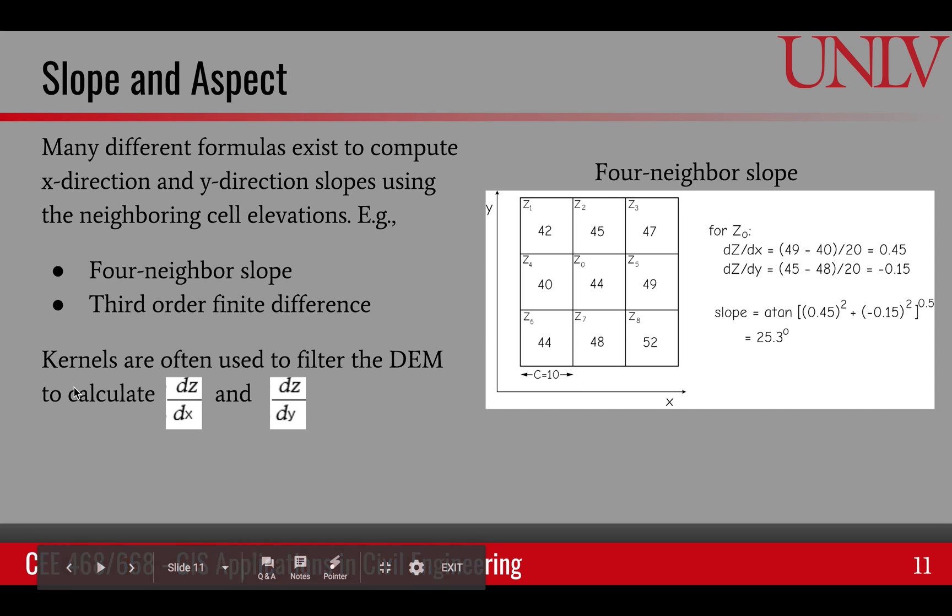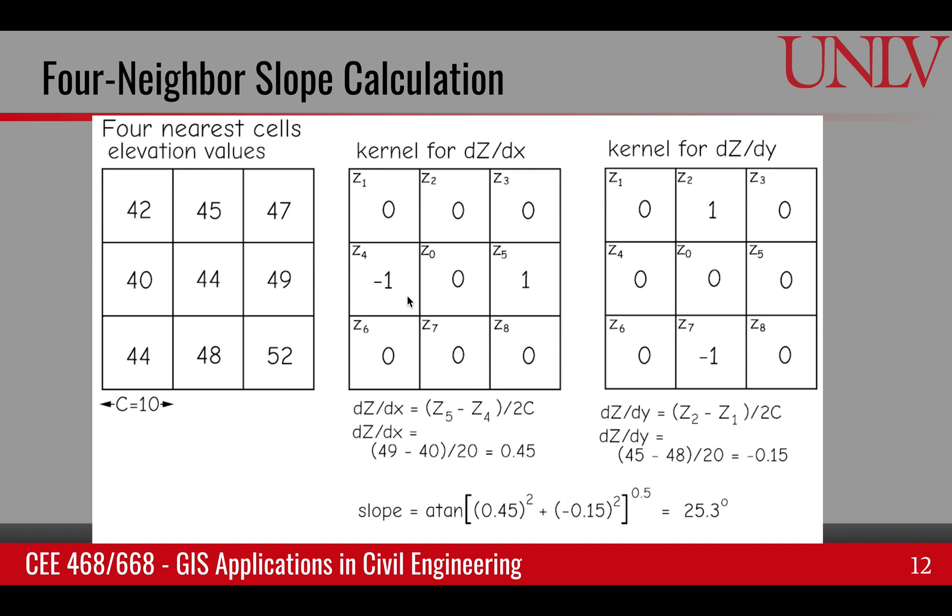One of the things that we can do, we can also create kernels that can be used to filter DEM. And so instead of running this kind of calculation for each pixel separately, we have this 3 by 3 kernel that can be applied to the whole image to get dz/dx and dz/dy. For example, the kernel for dz/dx will be minus 1 and 1 at the west and east location and 0 everywhere else.